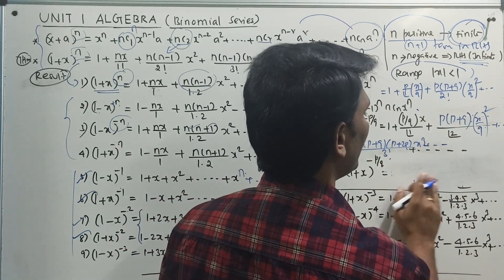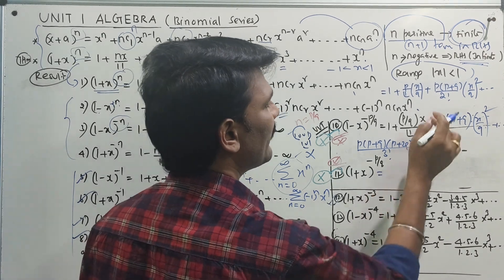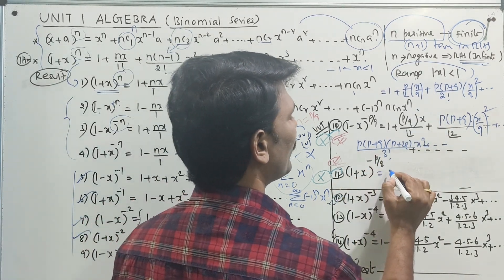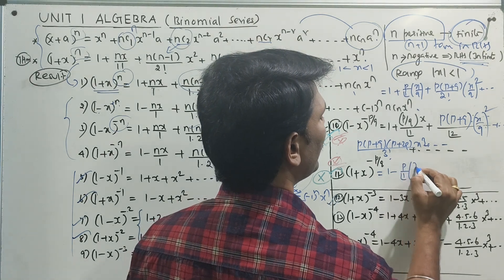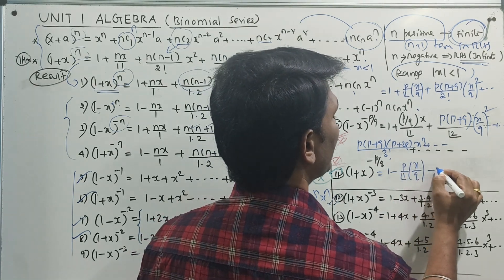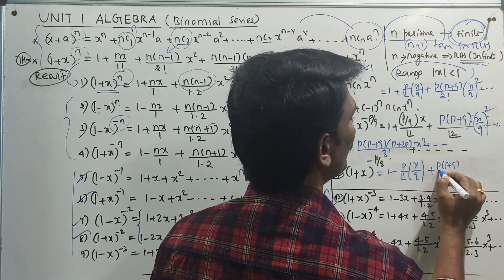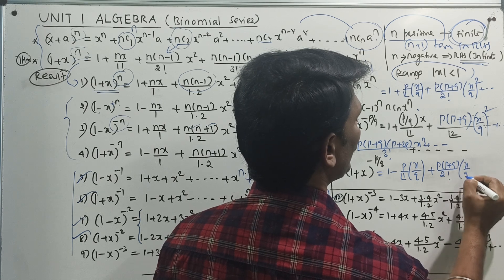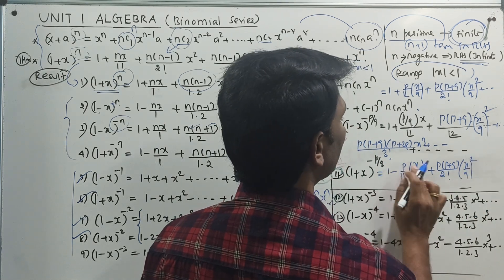You can see that the sum is equal to 1, plus minus alternate sign, 1 minus p by 1 factorial into x by q, plus p into p plus q by 2 factorial into x by q whole squared, and so on — equal to 1 minus p by 1 factorial into x by q.